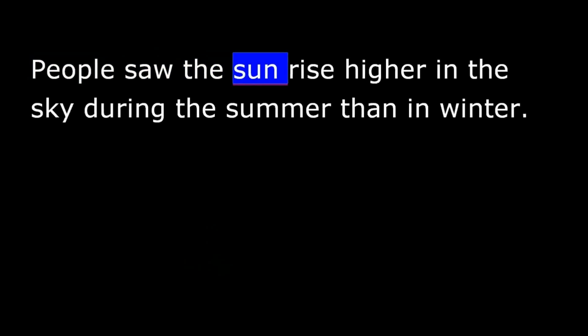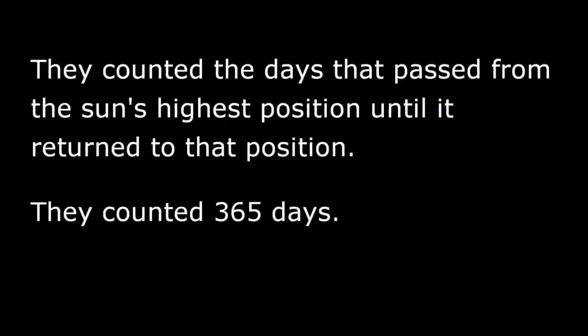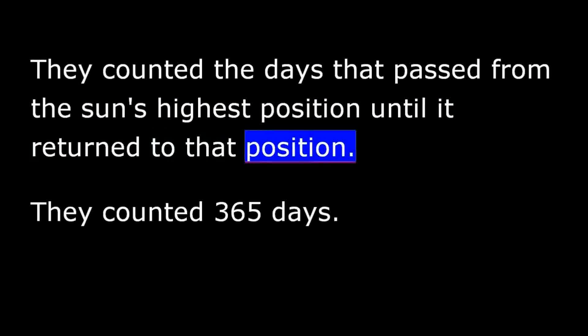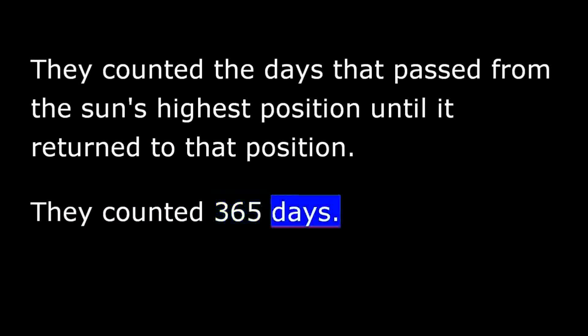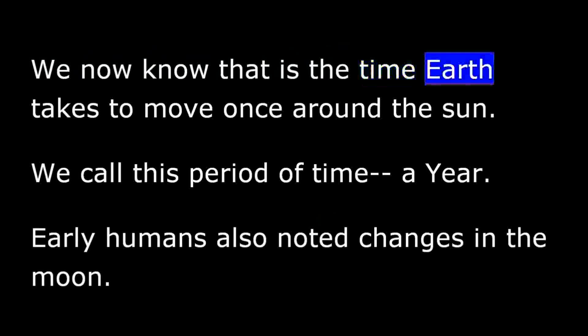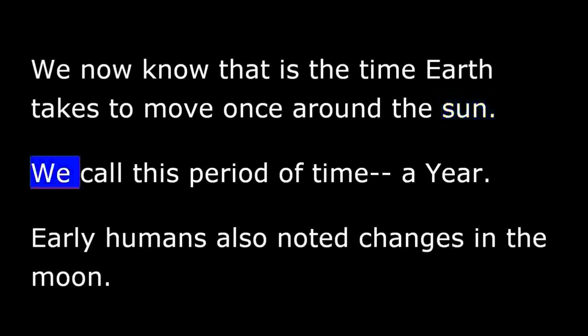People saw the sun rise higher in the sky during the summer than in winter. They counted the days that passed from the sun's highest position until it returned to that position. They counted 365 days. We now know that is the time Earth takes to move once around the sun. We call this period of time a year.